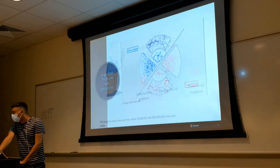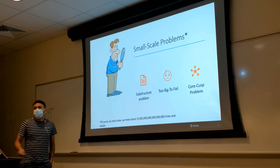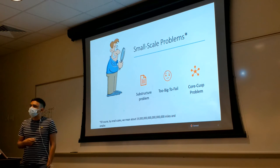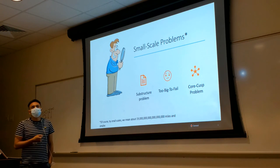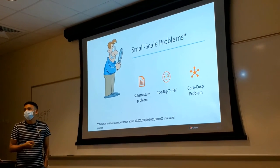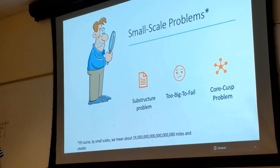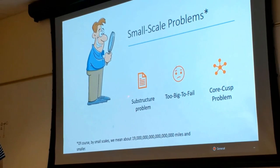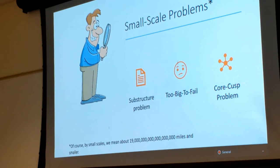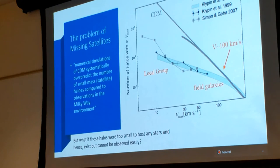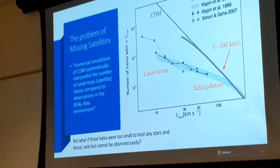However, as we zoom in on our simulations to scales of Milky Way-sized galaxies and smaller, we start seeing tensions that have been growing. We have three problems. The first is called the substructure problem, or missing satellite problem. The second is the too big to fail problem — basically two manifestations of the same problem at different mass scales. The third is the core-cusp problem.